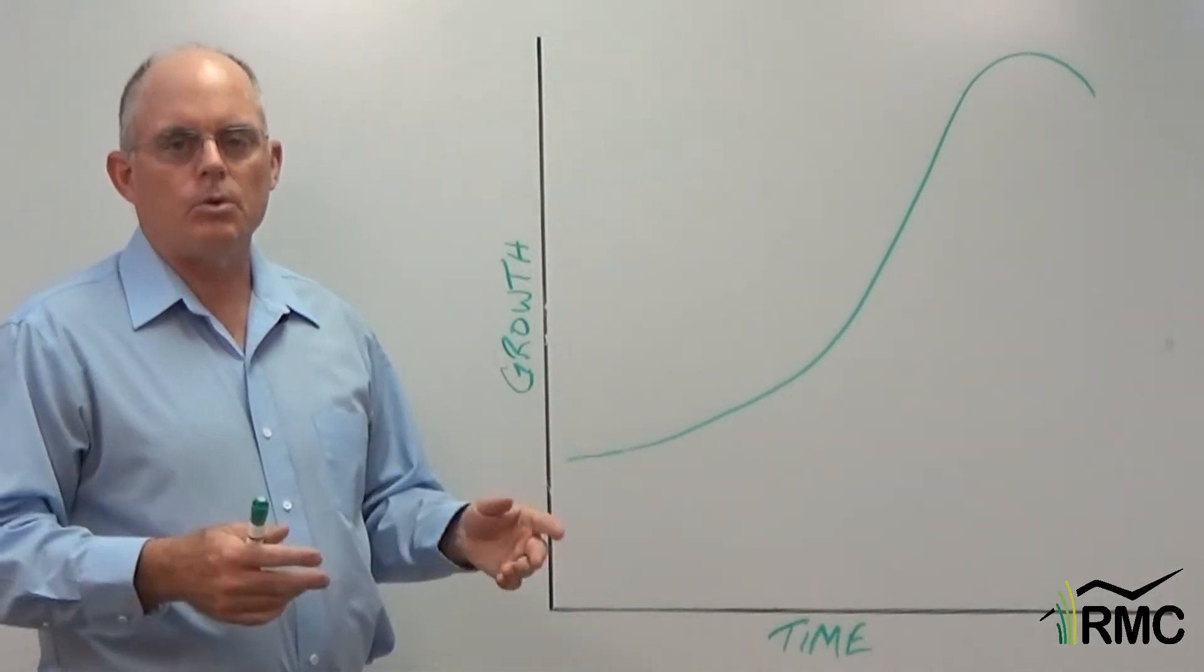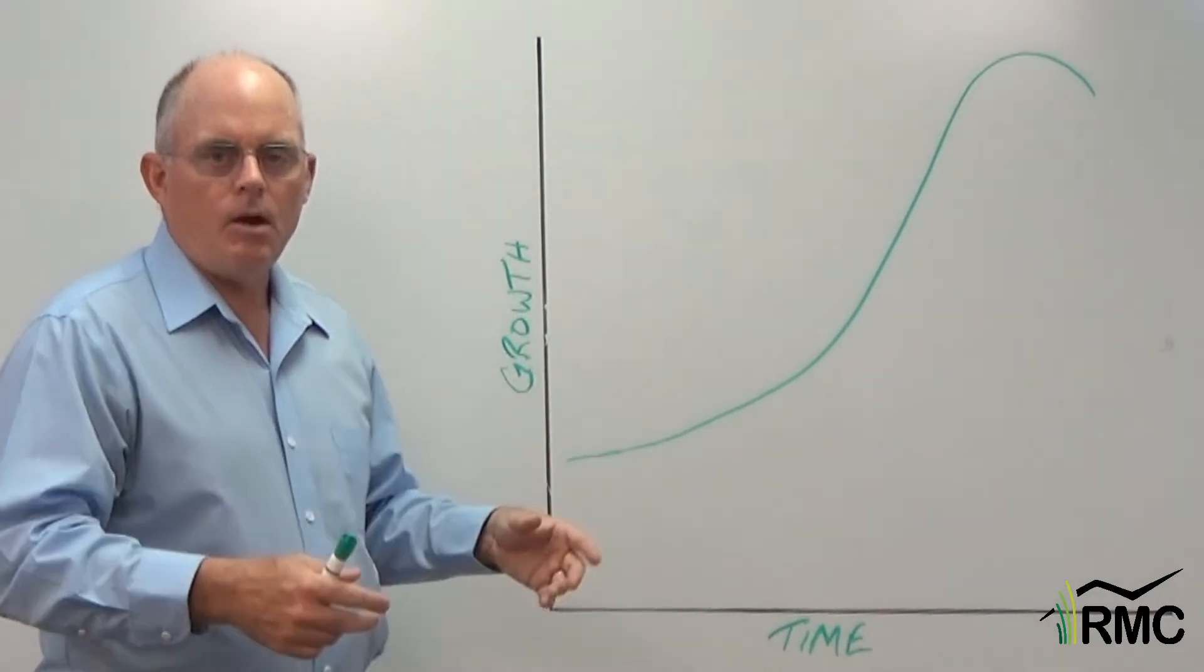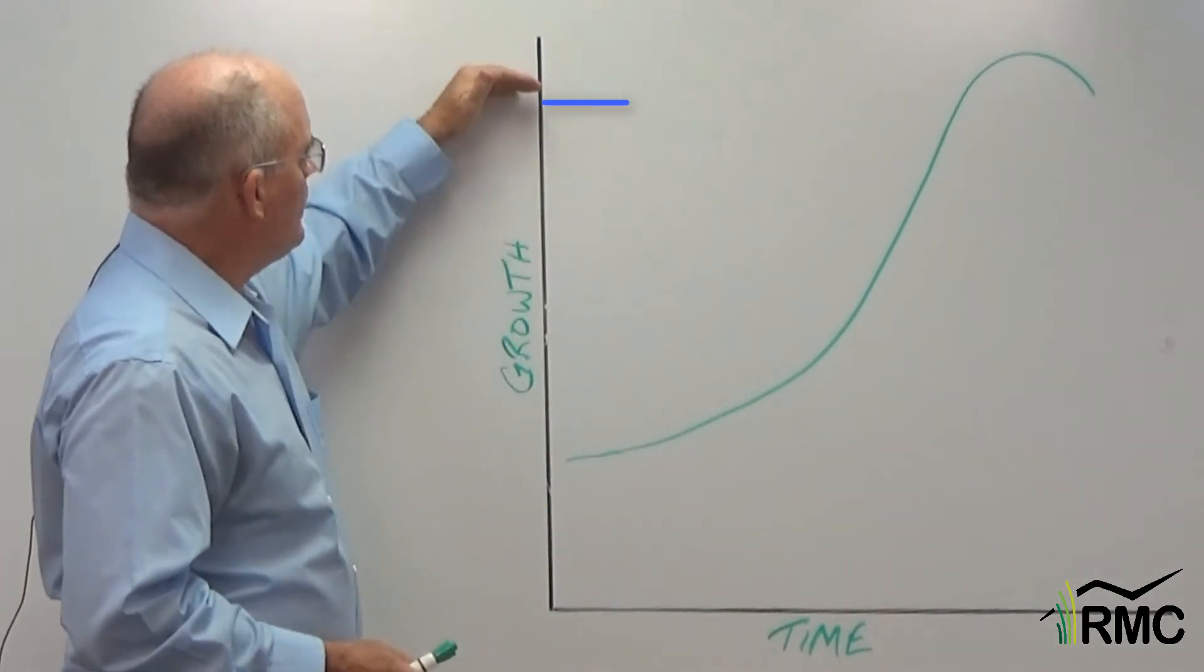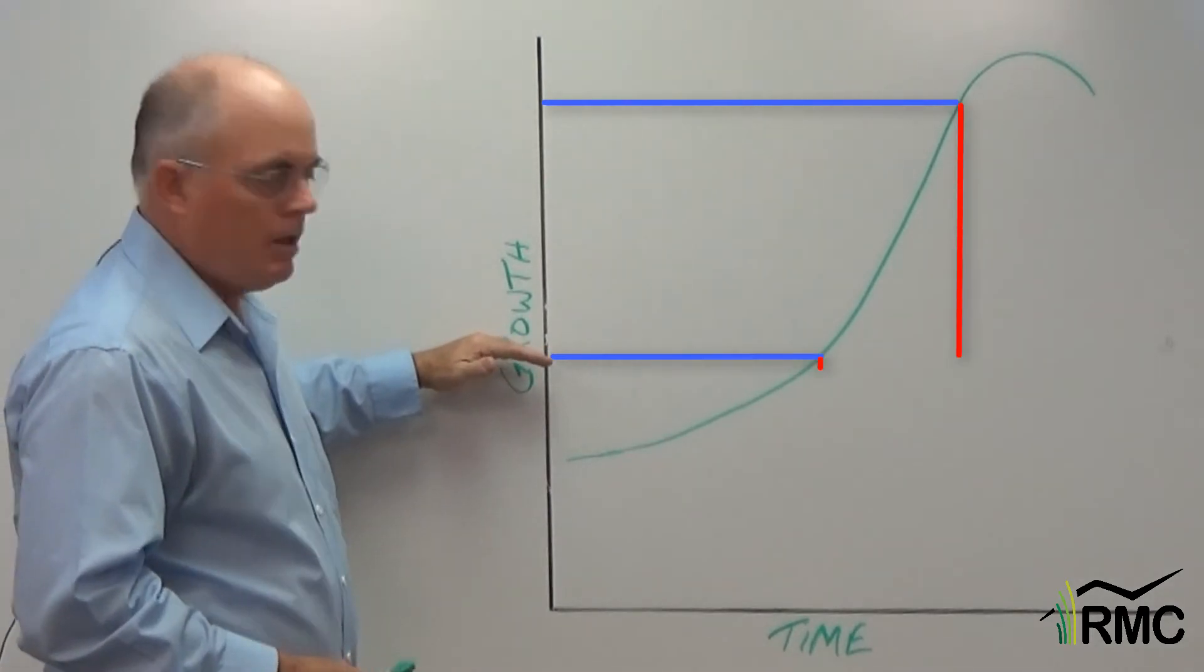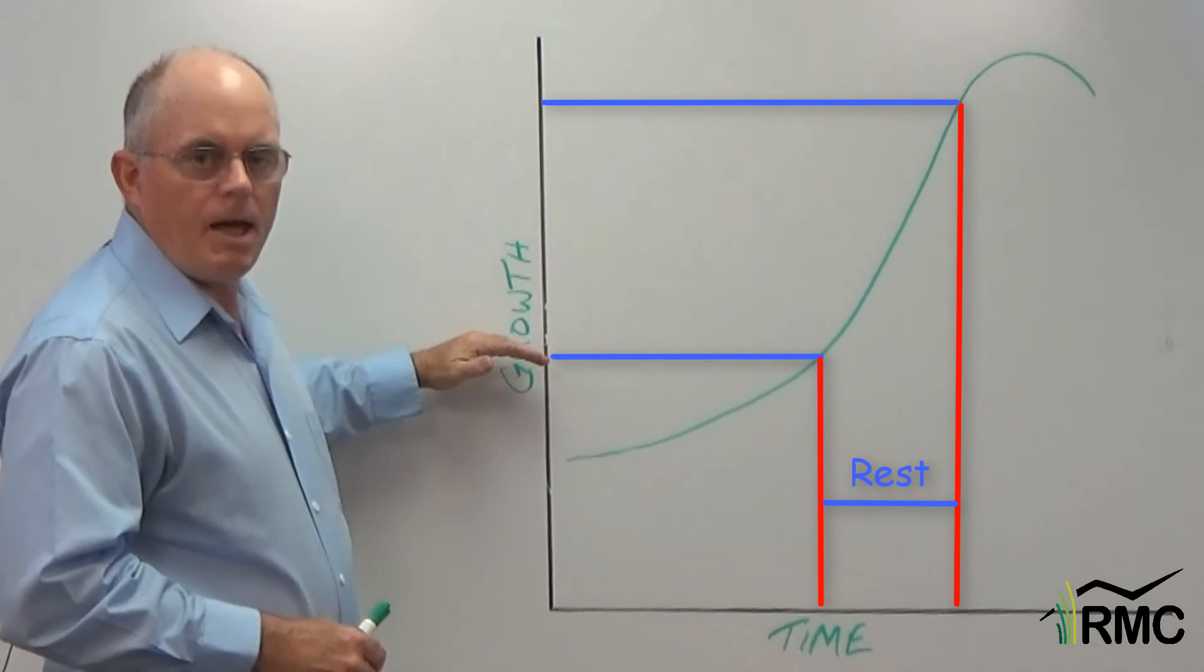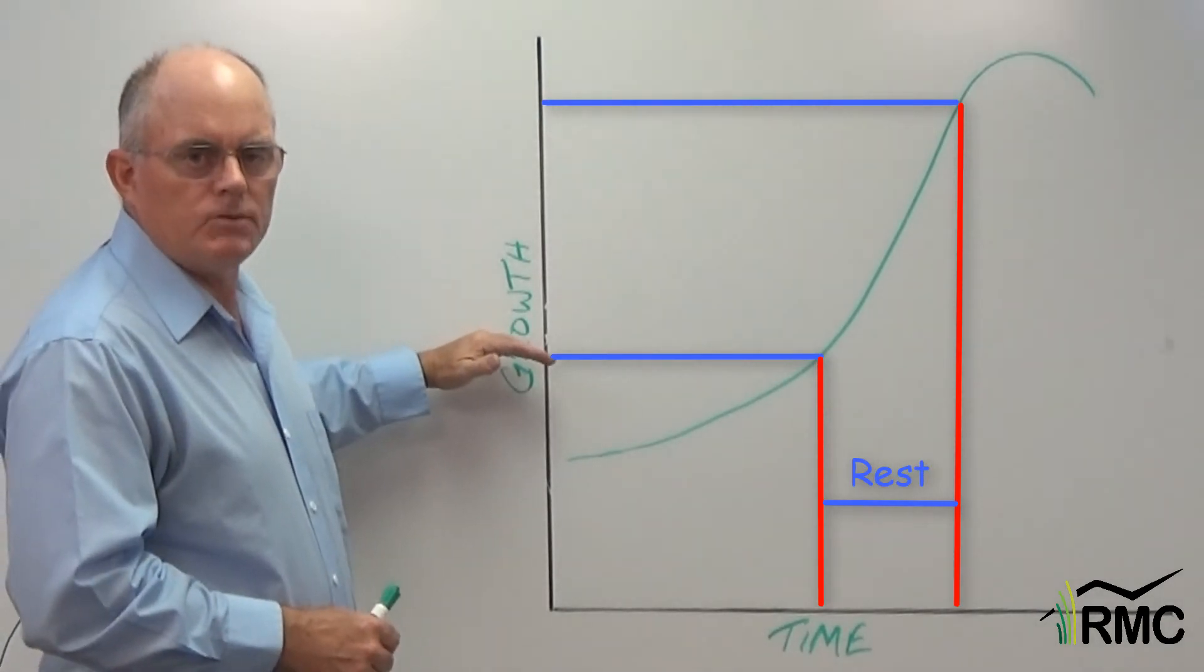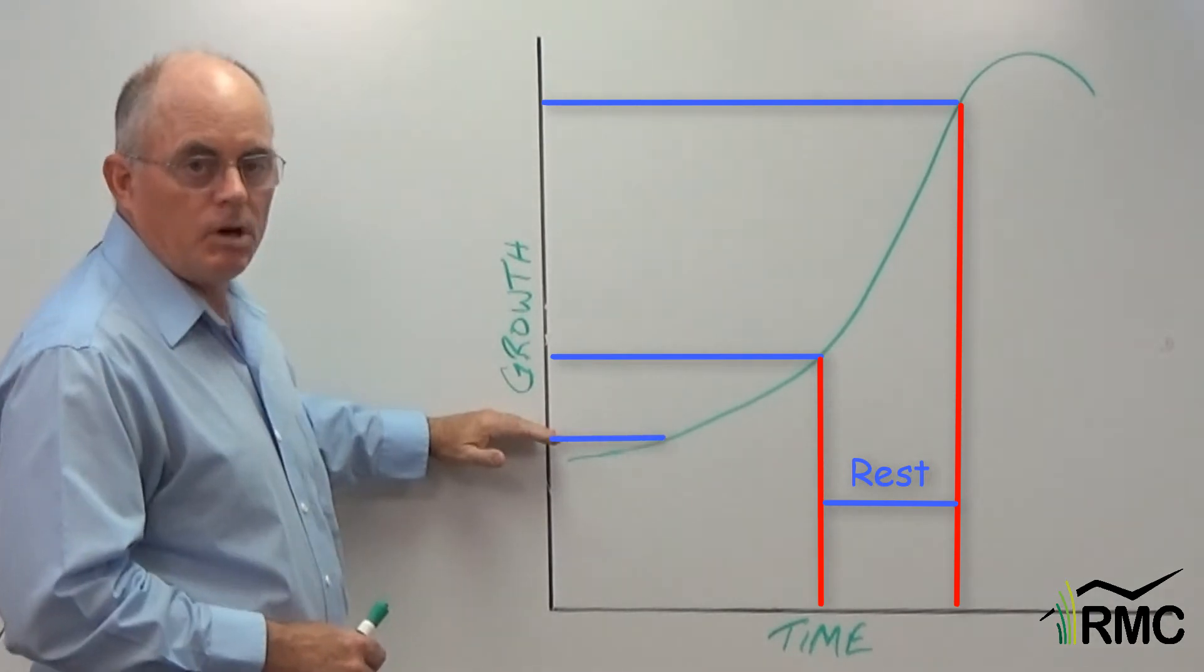Now however fast the growth is, let's say that this curve describes the pasture today. Now if we graze a pasture here and graze it down to say here, this is how long it will take to recover. Let's see what happens if I graze this pasture just a little more severely. Let's say we take it down to here, maybe another 25 percent.